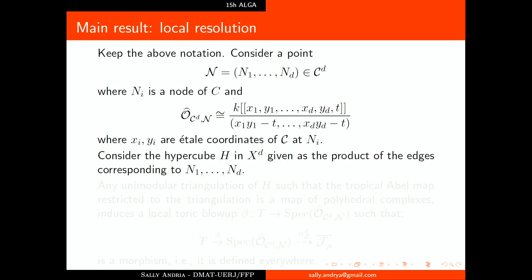Our main result says this: if we consider n points of nodes in our family and the completion of the local ring, we will associate this into—we see that the toric variety for making the subdivisions. And we consider a hypercube in X^d or tropical curve given as the product of the edges corresponding to n_1 to n_d.